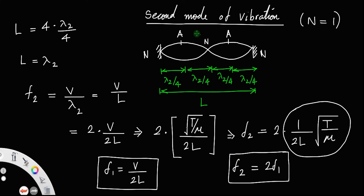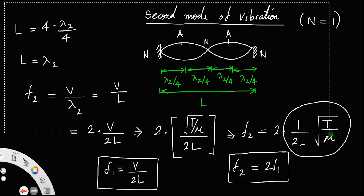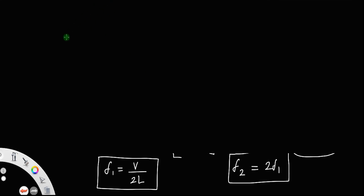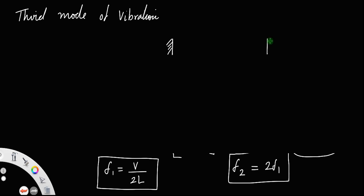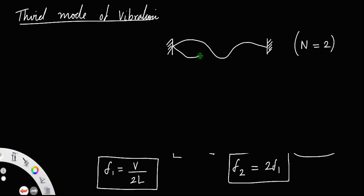Now let us discuss the third mode of vibration. Between the two fixed ends, the number of nodes is 3 minus 1, that is 2 nodes. So how will you draw that? It looks like this — there are two internal nodes, and the ends are also nodes.